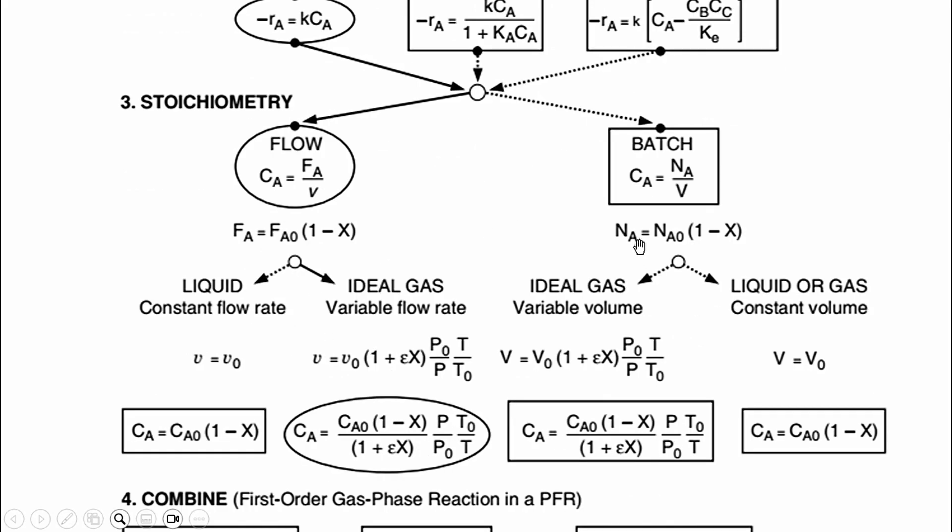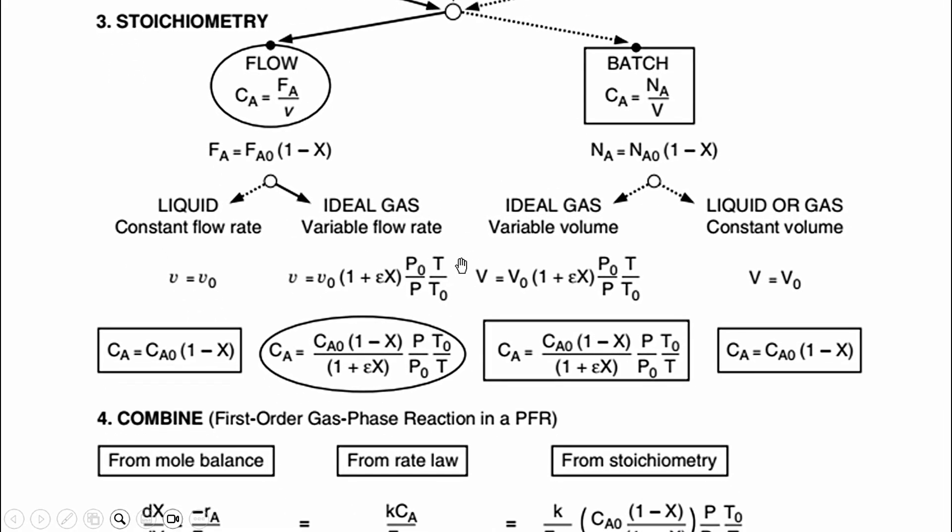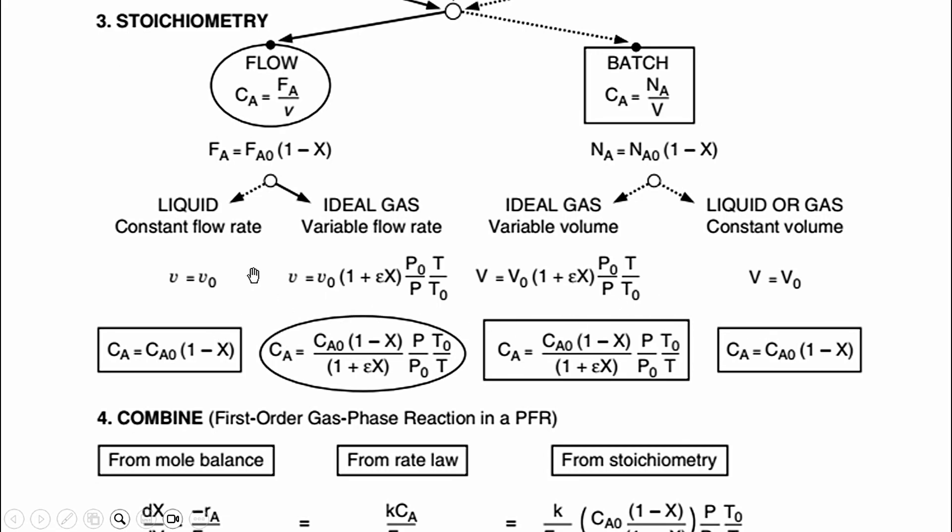Then we move to stoichiometry and we will see whether it is a batch system or flow system. Accordingly, we will apply the corresponding equations for either liquid system or gas system. You can see we have derived all these equations like v = v0 (volumetric flow rate), v = v0(1+εX)(P0/P)(T/T0). Accordingly, CA = CA0(1-X), CA = CA0(1-X)/(1+εX)·(P/P0)·(T0/T). Here small v is volumetric flow rate, capital V is volume of the reactor.